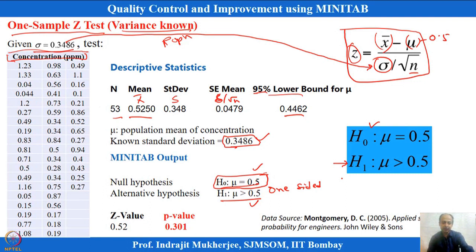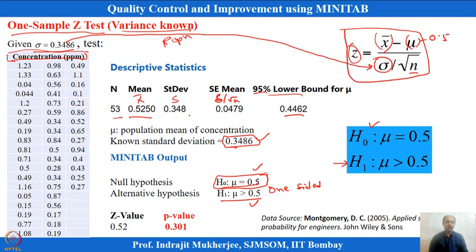How do we do it in Minitab? The Z test is used assuming the variable follows a normal distribution. Although this is robust because we are making a Z conversion from the mean value, the underlying assumption is that the data is not highly skewed and follows a normal distribution when applying the Z test. Assuming this is true, we do the one-sample Z test to see whether mu equals 0.5 or mu not equals 0.5.